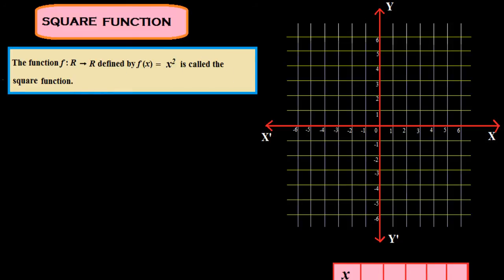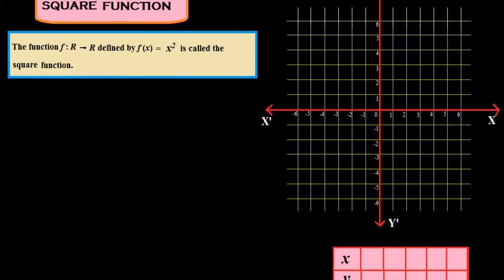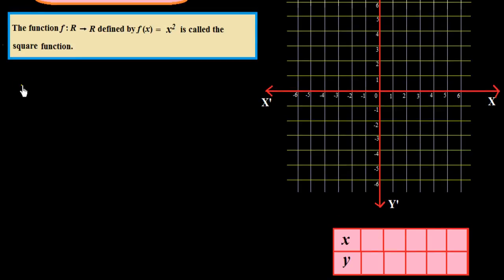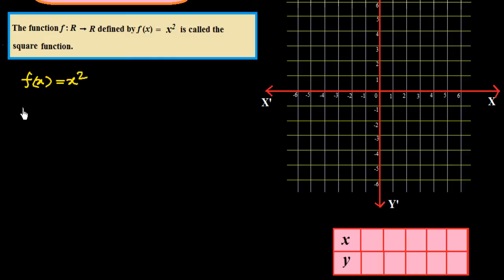Here I would like to explain in detail. We know that f of x is equal to x squared in the square function. So we put some values for x and find what we get for f of x.